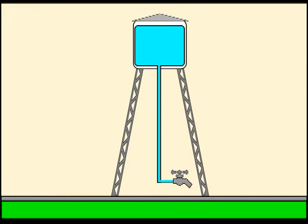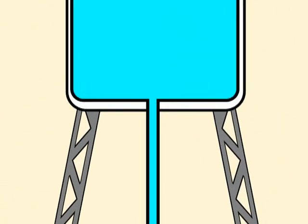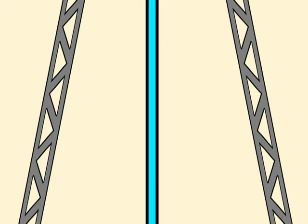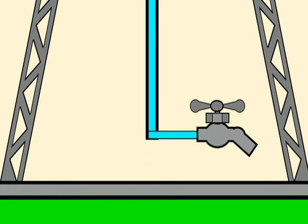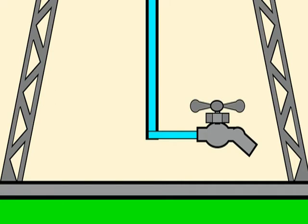To understand all this better, we can compare it to a water tank located at a certain height. At the base of the structure supporting the water tank, there is a valve which can be fully or partially opened depending on the amount of water you want to extract. The height of the tank is comparable to voltage, generating enough pressure for the water to circulate — measured in kilograms per square centimeter or pounds per square inch. The vertical pipe is similar to a conductor, with current equivalent to liters or gallons of water per minute. The resistance is similar to the valve, with high resistance when nearly closed and low resistance when fully open — determined by the friction of the liquid against the pipe walls.